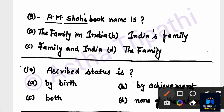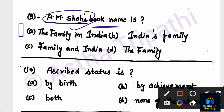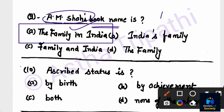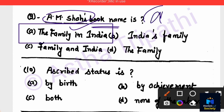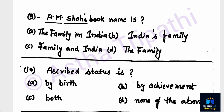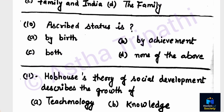Question number nine: What is the name of M. Shah's book? Options are 'The Family in India,' 'India's Family,' 'Family in India,' 'The Family.' The correct answer is option A — 'The Family in India' is the name of M. Shah's book.